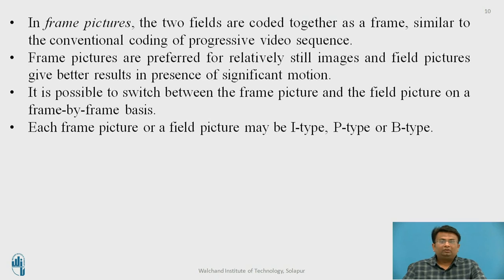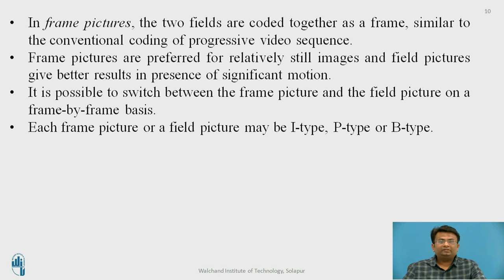In frame picture format, two fields are coded together to form a frame, similar to conventional coding of progressive video sequences. Frame pictures are preferred for relatively still images, whereas field pictures give better results in the presence of significant motion. It is possible to switch between frame picture and field picture on a frame-by-frame basis.